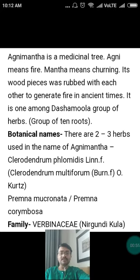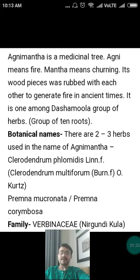It is one among the Dashamula group — the group of ten roots. Regarding botanical names, there are two to three herbs used under the name of Agni Mantha. The first one to mention is Clerodendrum phlomidis as per Carolus Linnaeus, then Clerodendrum multiforme, Premna micronata, Premna corimbosa, and Premna integrifolia. In some places, Premna seratifolia is also used as Agni Mantha in certain parts of India. It belongs to the family Verbenaceae, which is Nirgundi Kula.